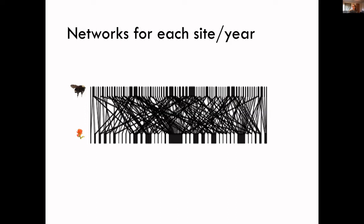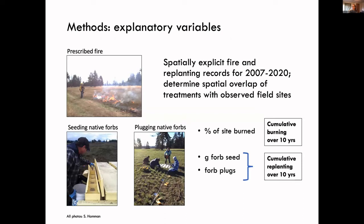We used that information to build plant-pollinator networks. In these networks, black bars across the bottom represent plant species, black bars across the top represent pollinator species, and a connecting line indicates those species were witnessed interacting in the field. We also collected spatially explicit fire and replanting records to create two major variables: the proportion of the site burned over the previous 10 years, and the proportion replanted over the previous 10 years.